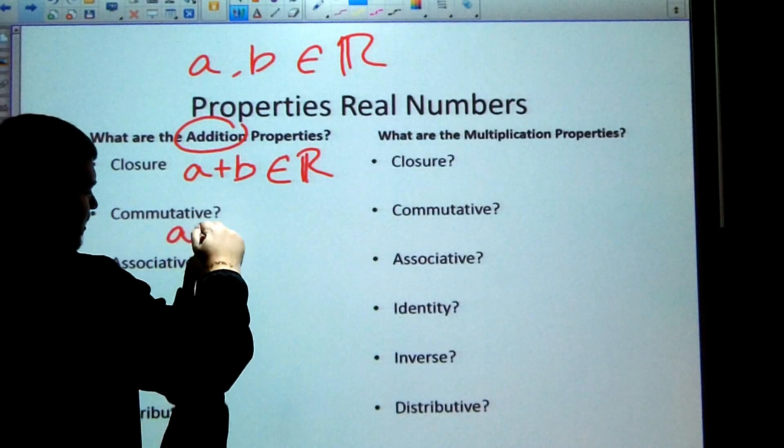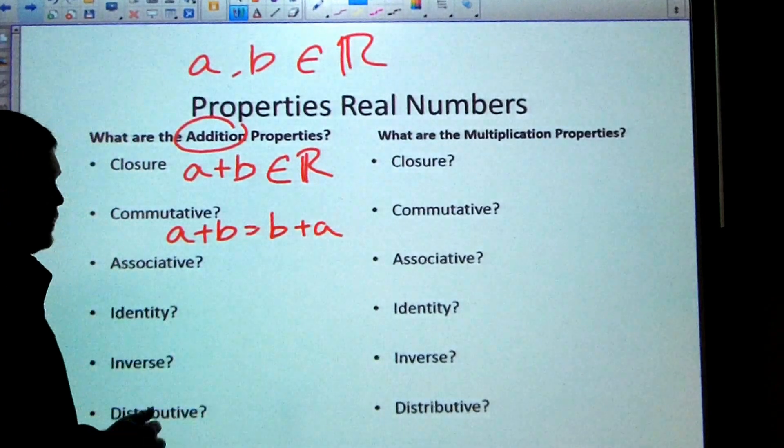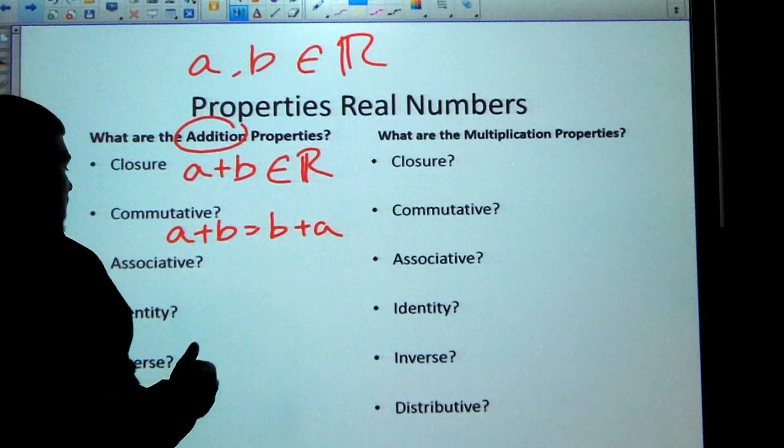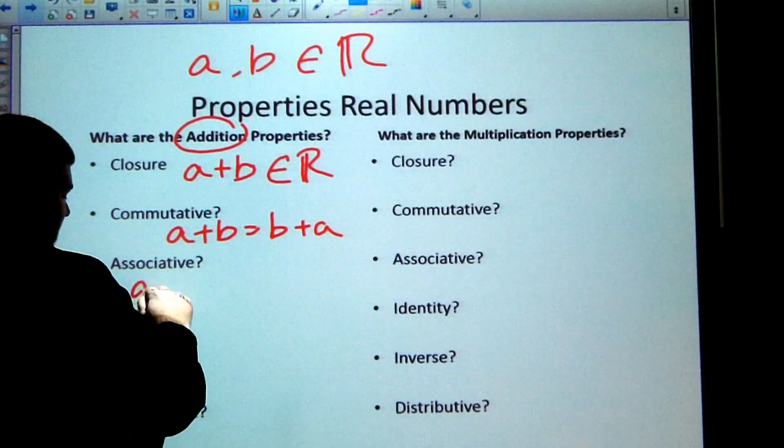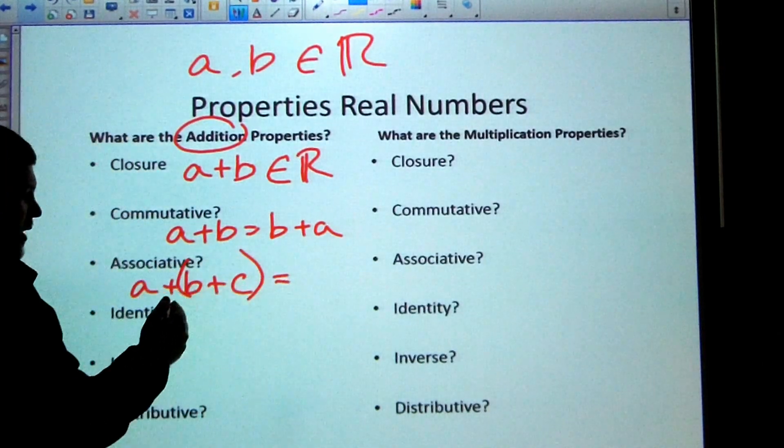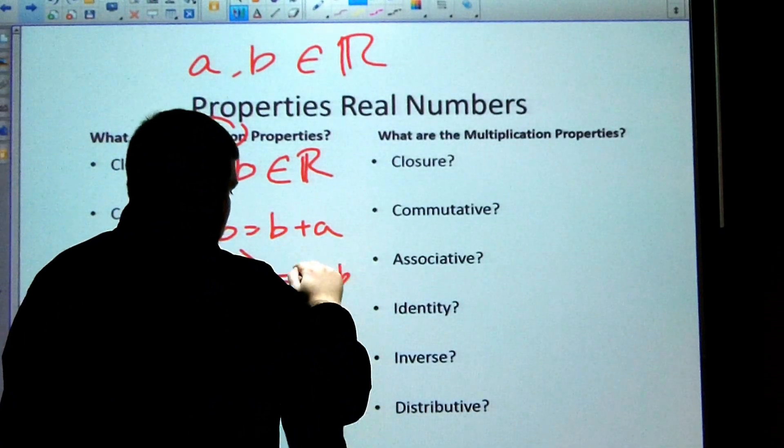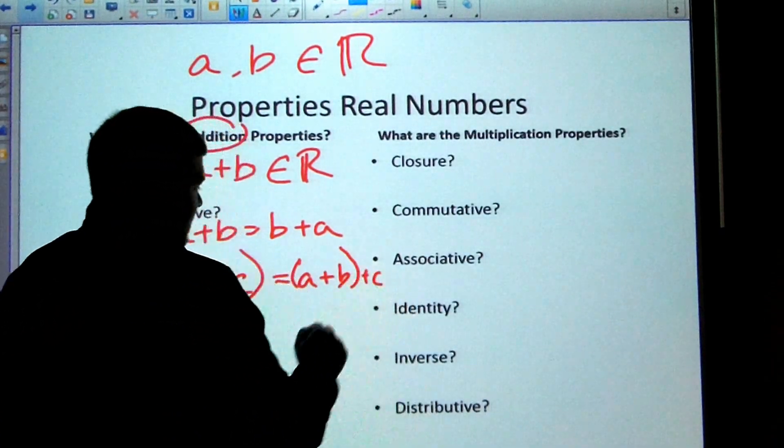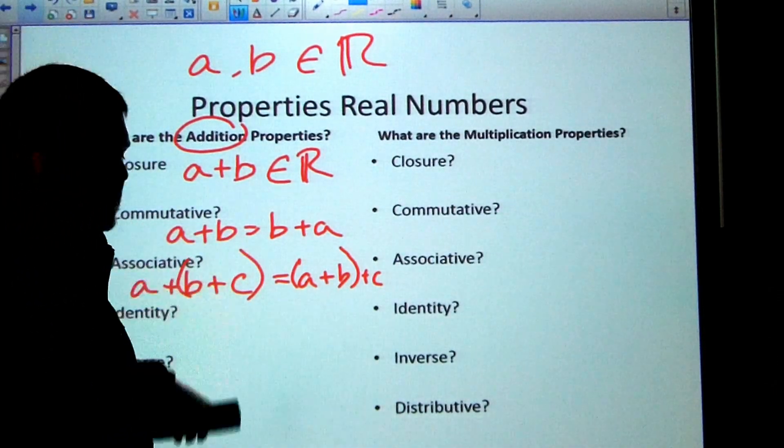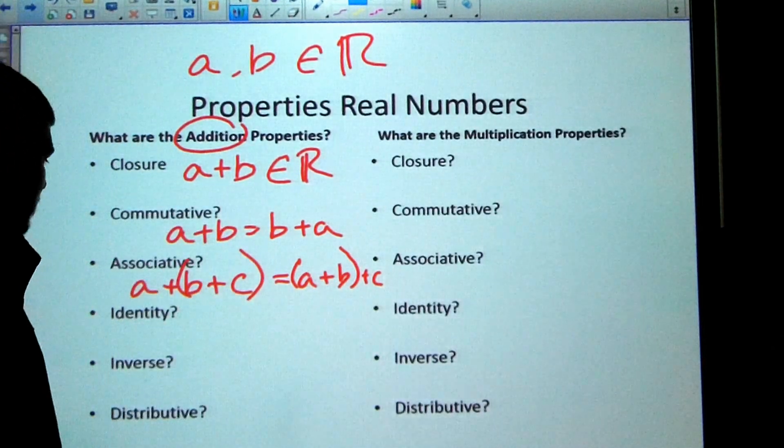Commutative property says the order doesn't matter. So A plus B is the same thing as B plus A. The order that I add does not matter. The associative property uses grouping. So I'm going to use A plus B plus C and put these in parentheses. But I can regroup those. I could say, all right, well, instead I'm going to do A plus B first plus C. Grouping doesn't matter. Remember, we use parentheses to group. And based on the order of operations, we take care of parentheses first.